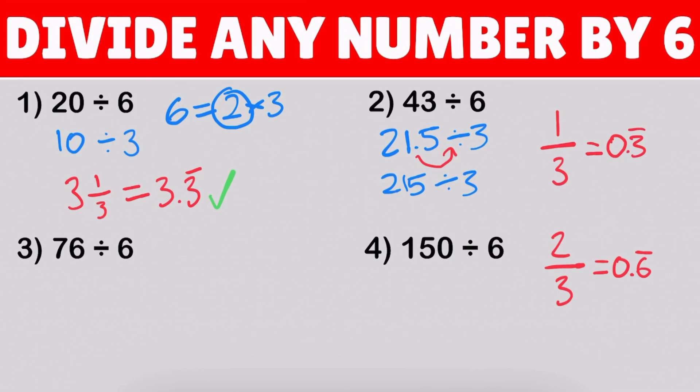So, starting with 2, well, 2 is lesser than 3, so we're going to expand our scope to 21. Now, 21 divided by 3, that gives us 7, and no remainder. And, then finally, we have 5. 5 divided by 3 gives us 1, and there is a remainder of 2 at the end. So, we can write 2 thirds.